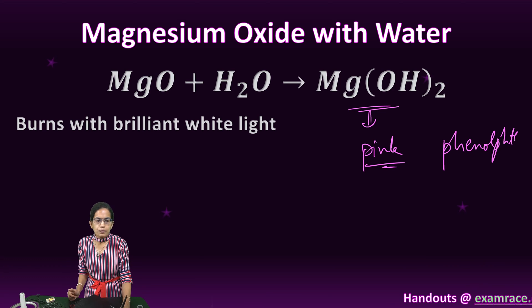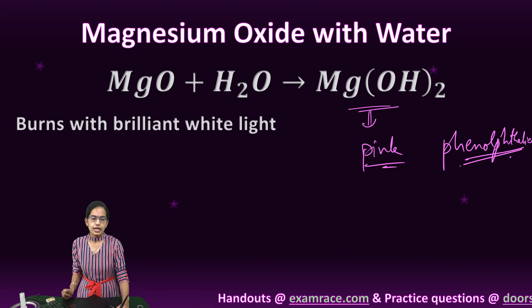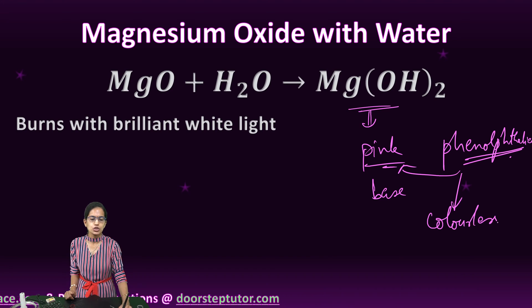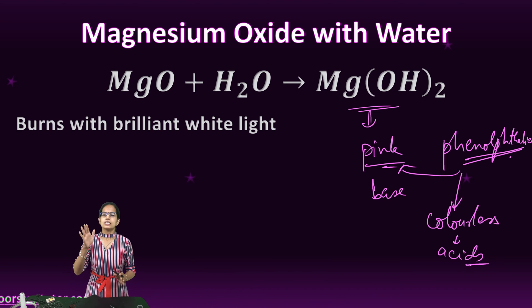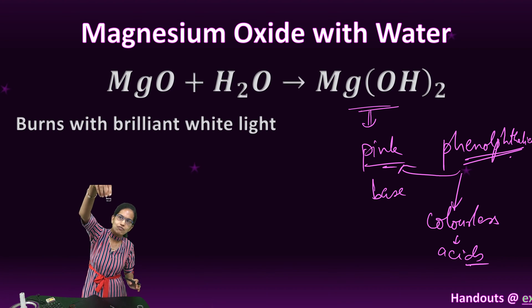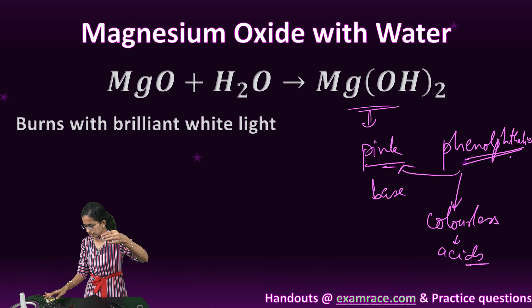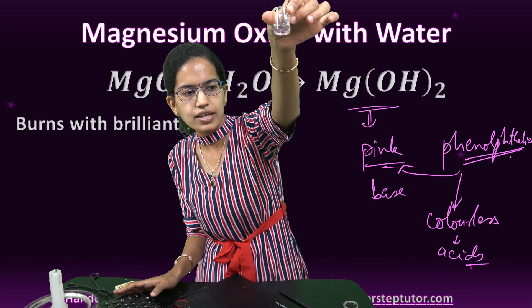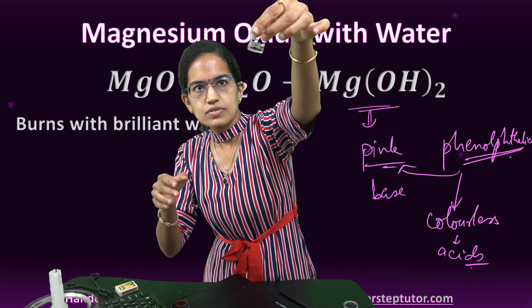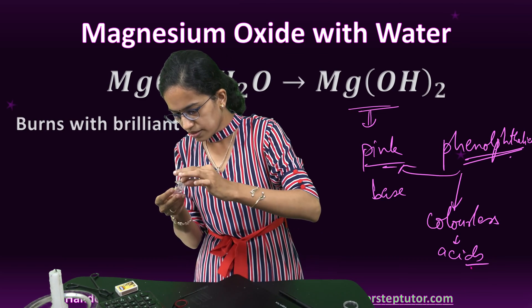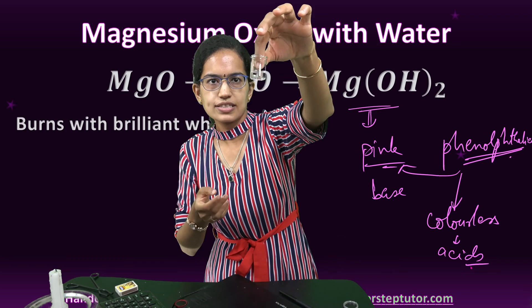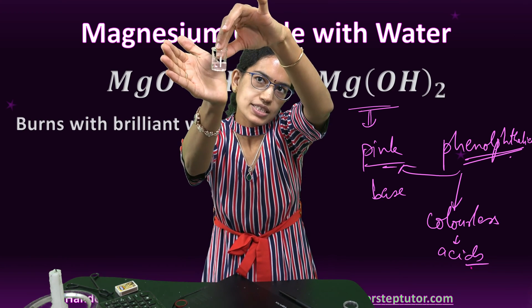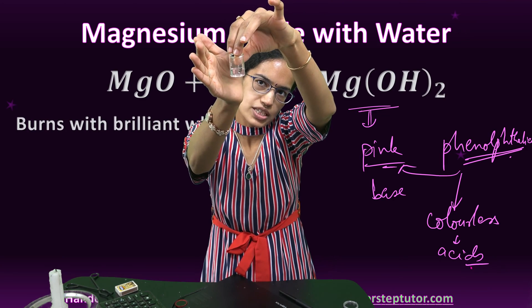Phenolphthalein is an indicator for acid-base reactions — it turns pink for a base but remains colorless for acids. Let me zoom in so you can have a closer look at how the solution turns pink. You can see this turning into a pink solution — there is a pinkish shade visible.